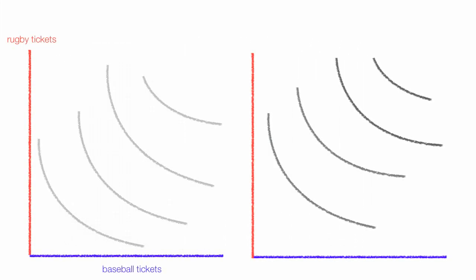We have two indifference maps. Rugby tickets along the vertical axis and baseball tickets along the horizontal axis. David's indifference curves are on the left and Joe's indifference curves are on the right.